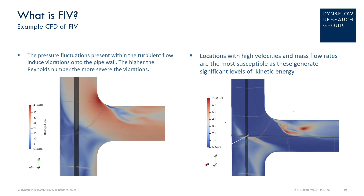The turbulent eddies induced by a major flow discontinuity cascade onto the pipe wall, inducing these pressure fluctuations, and therefore the vibrations onto the pipe wall. The higher the Reynolds number, the more severe the vibrations.